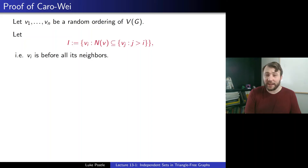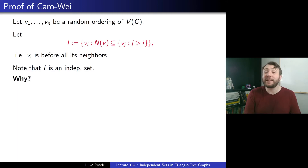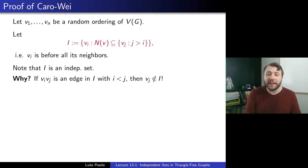The claim is that I is an independent set. Why? If vi vj is an edge in I with i less than j, then vj actually can't be in I — it would have an earlier neighbor. So by picking vertices that appear first among all their neighbors, we guarantee an independent set.